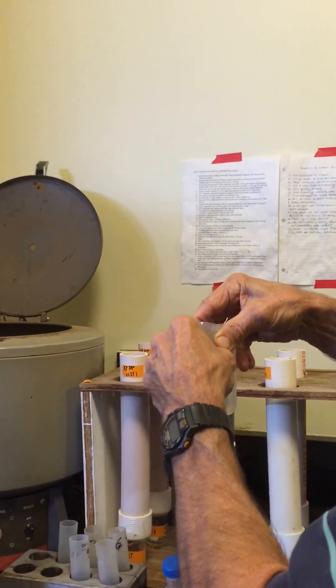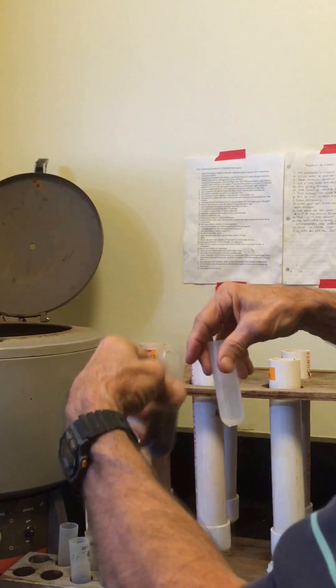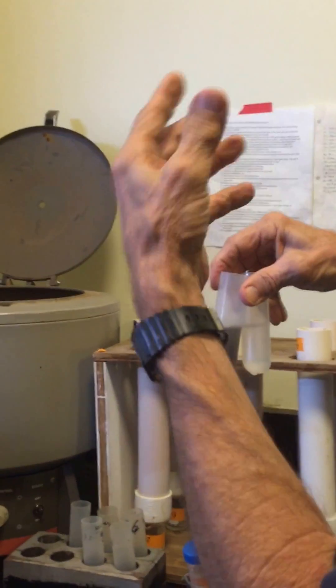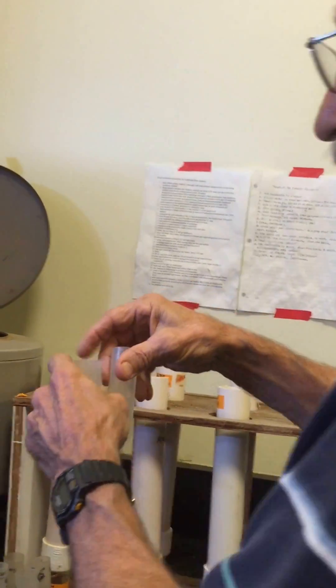Resuspend them and then centrifuge it slowly - slowly enough to pull the particles down but keep the sugar to keep the nematodes floating. So is it saturated sugar? It's one molar sugar.